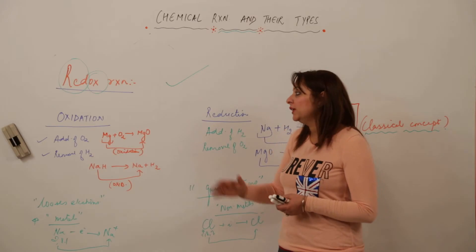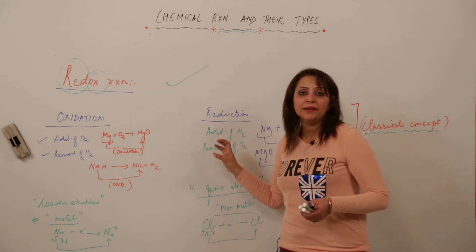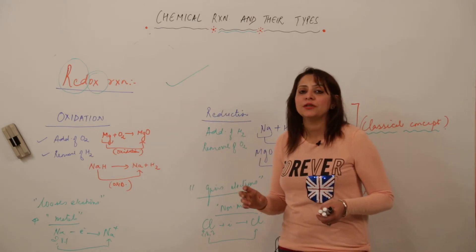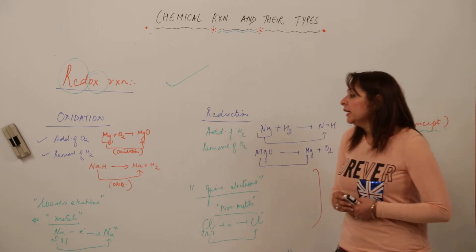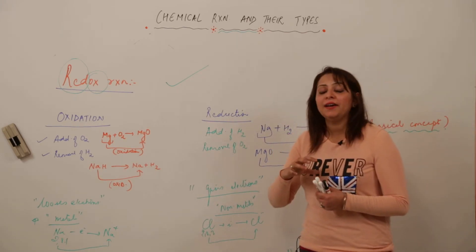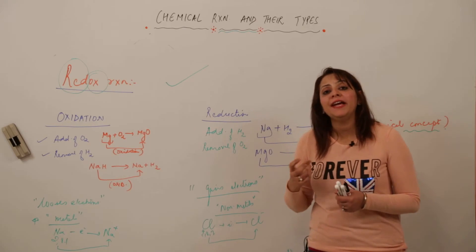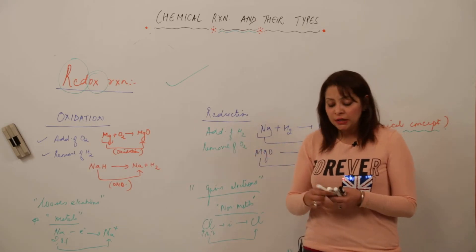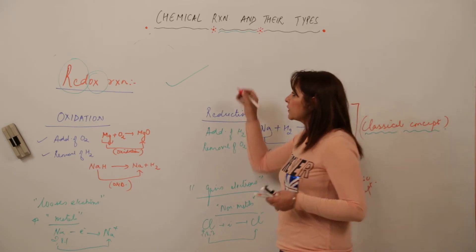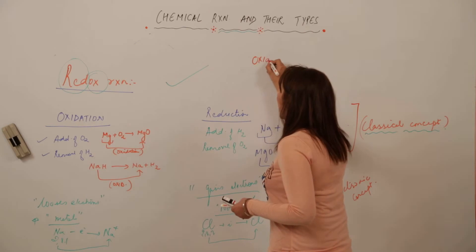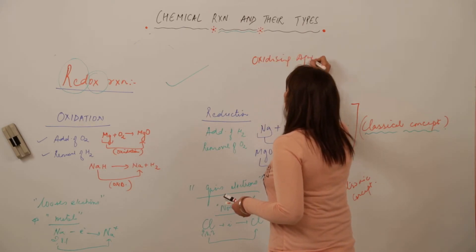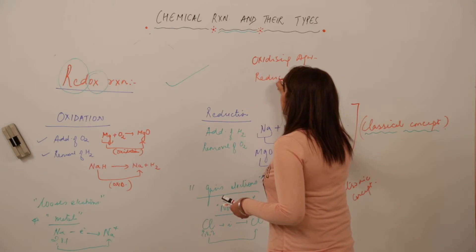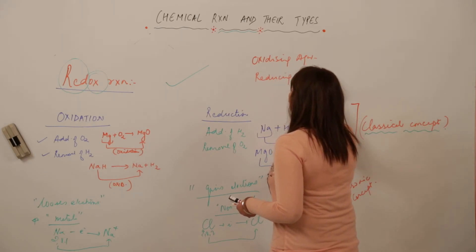A redox reaction refers to both oxidation and reduction — it is a combination of the two. There are also two kinds of agents involved in this reaction: an oxidizing agent and a reducing agent. What do we mean by these terms?